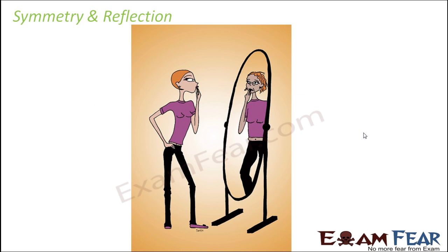There is a very close relationship between symmetry and reflection. What comes to your mind when you think of reflection? We stand in front of a mirror. You can see yourself on the mirror, and this is possible because of reflection of light. You would have observed that you can see yourself in the mirror only in the presence of light — if you switch off the light, even standing in front of the mirror, you will not be able to see yourself.